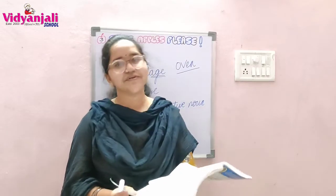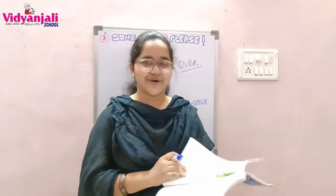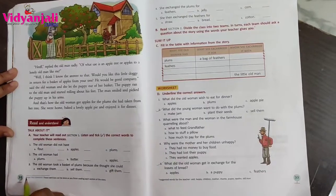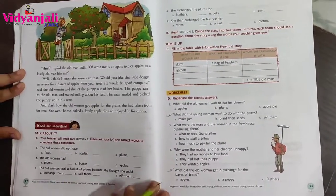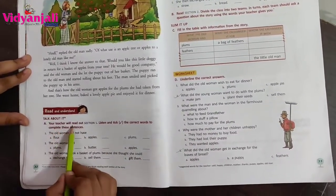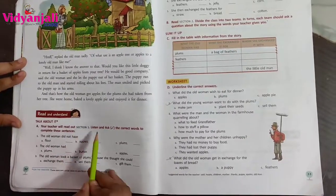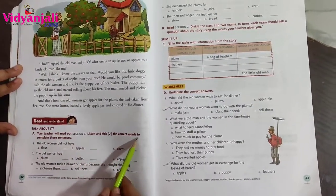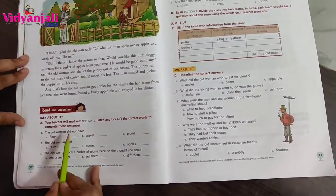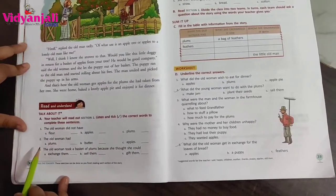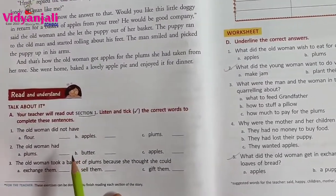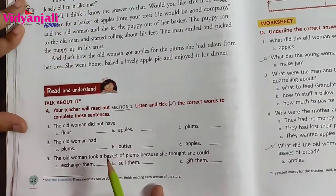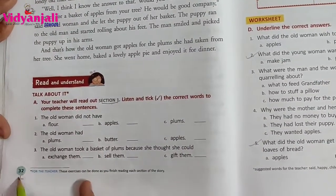Section 1 we have successfully finished. Now there is an exercise regarding Section 1 — let's solve that. Tomorrow we will go through Section 2. Textbook page number 32. Your teacher will read out Section 1; listen and take the correct words to complete these sentences. I read Section 1 just now and you listened — now you have to give me the answers.